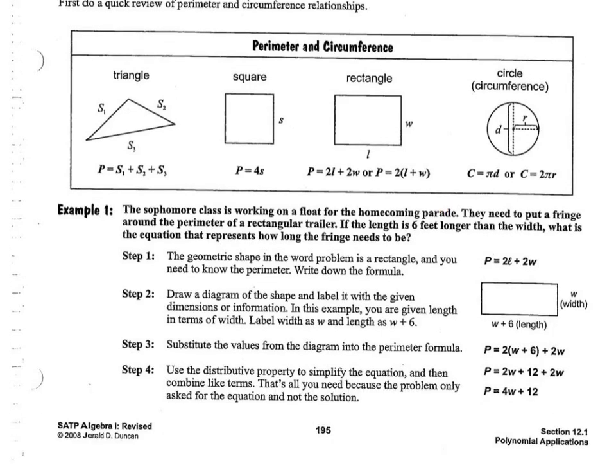So over here I have our first example. The sophomore class is working on a float for their homecoming parade. They need to put a fringe around the perimeter of a rectangular trailer. If the length is 6 feet longer than the width, what is the equation that represents how long the fringe needs to be? In this case it says equation but we are actually looking for an expression because we are not really going to be solving for x or w or l or whatever. We are just going to be writing out an expression for the perimeter.